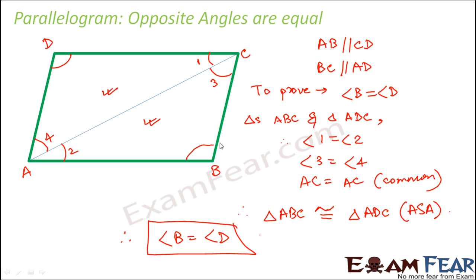In case you have any questions about why angle D became equal to angle B: if you look at the other angles, angle 1 is already equal to angle 2, and angle 4 is already equal to angle 3. So you are left with one angle in each triangle - angle B and angle D respectively - therefore angle B equals angle D, which are the opposite angles of the parallelogram. This proves that opposite angles are equal.